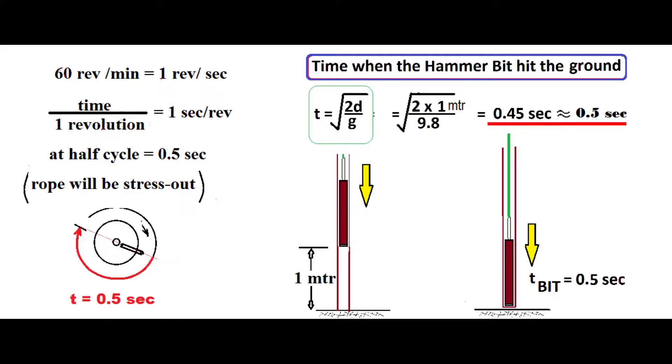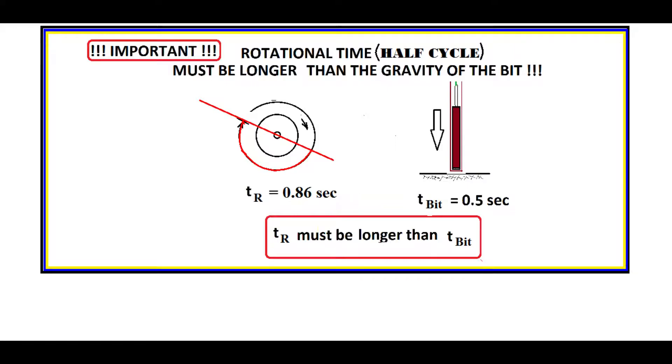As you can imagine in this data, if we design a 60 revolution machine, the time at half cycle equals 0.5 seconds. So the tendency is the rope will be stressed out with a trembling effect because the hammer bit did not settle down first. So the harmony of pulling and releasing of the hammer bit was not achieved.